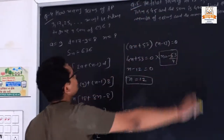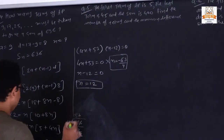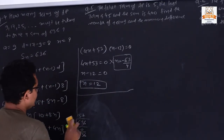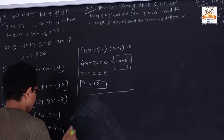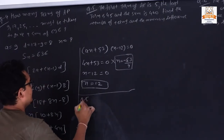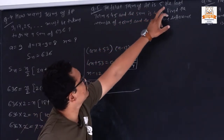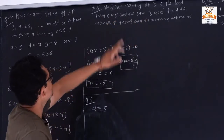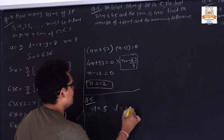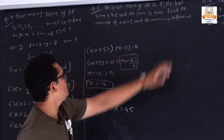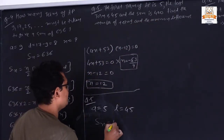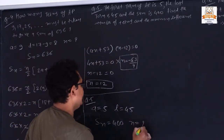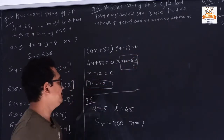Question number 5: The first term of an arithmetic progression is 5, so a = 5. The last term l = 45. The sum Sn = 400. Find the number of terms n and also find the common difference d.